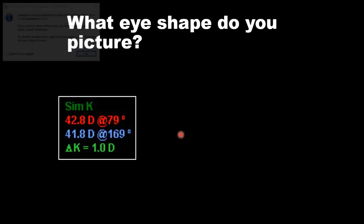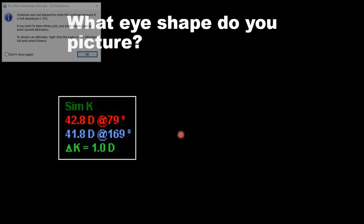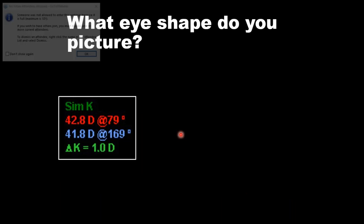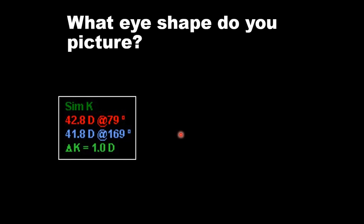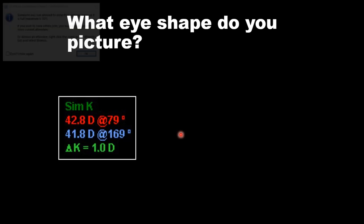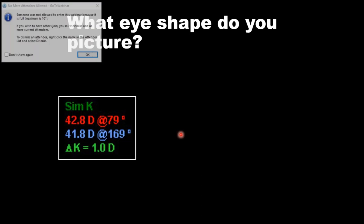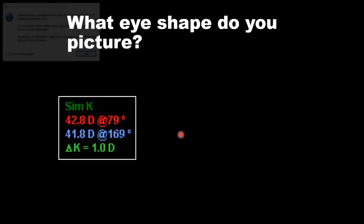Let's start with an example. If you took this particular K reading — 41.8 by 42.8, or one diopter of corneal astigmatism — how would our attendees interpret your topography? Look at these keratometry values: 42.8 and 41.8, just one diopter of astigmatism.